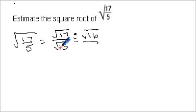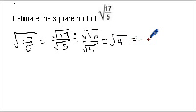And then the closest perfect square to 5 would be 4. So 16 divided by 4, and the square root of 4 is 2. So an estimate of this square root is 2. It's very close to 2, it's not exact.